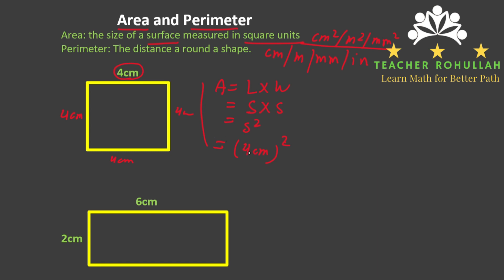Squaring four means four times four, which equals 16. Centimeter times centimeter equals centimeter squared. So the area of this square is 16 centimeters squared.